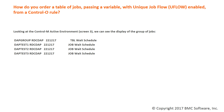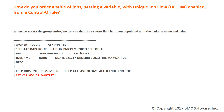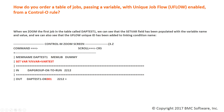Looking at the Control-M active environment, screen 3, we can see not only the group name but the three jobs in our example. When we zoom the group entity, we can see that the set var field has been populated with the variable name and value. When we zoom the first job in the table called DAPTest1, we can see that the set var field has been populated with the variable name and value, and we can also see that the uFlow unique ID has been added to the linking condition name.